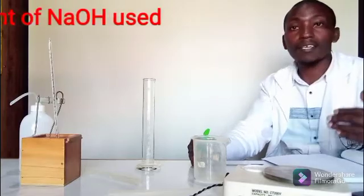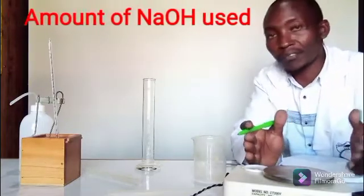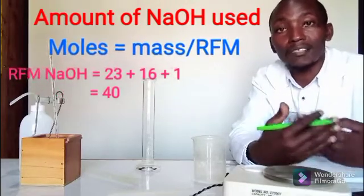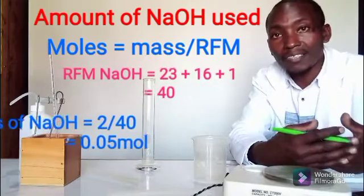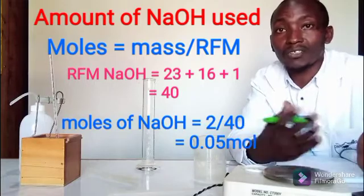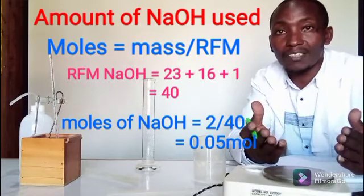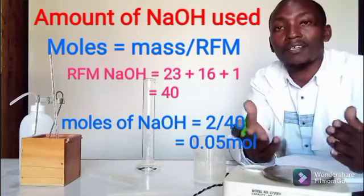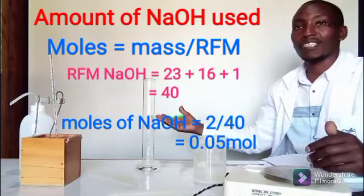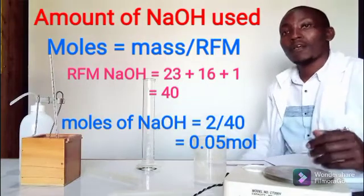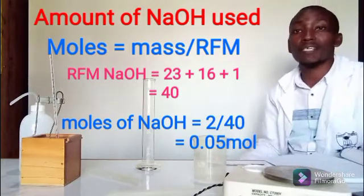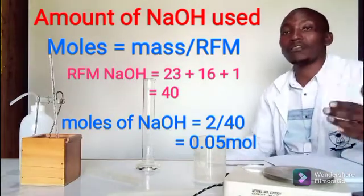The next thing we need to calculate is the amount of sodium hydroxide we started with. We started with 2 grams, so we divide 2 grams by the molar mass of sodium hydroxide: 23 (sodium) + 16 (oxygen) + 1 (hydrogen) = 40 g/mol. So 2 ÷ 40 = 0.05 moles of sodium hydroxide dissolved in water.